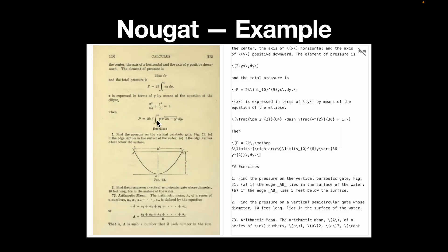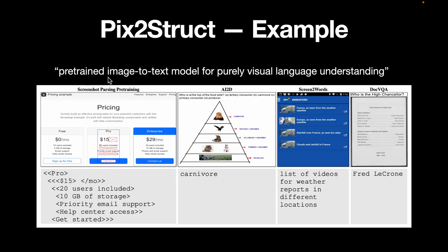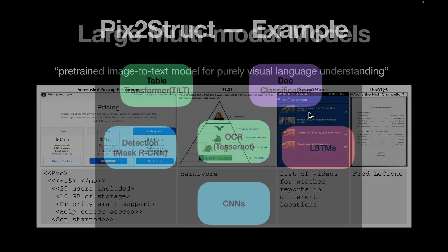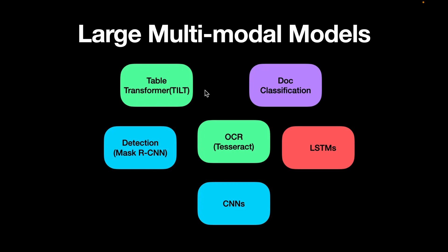Nougat converts input PDF files — for example, given an image of a book, it readily extracts equations into LaTeX format, indicating it understands the symbols in the equations, and it also extracts the text accurately. Pix2Struct is a pre-trained image-to-text model that purely does visual language understanding. There are also large multimodal models like Table Transformer, which specializes in extracting tables from PDFs, and object detection-based methods like Mask R-CNN to detect images or figures, as well as CNN and LSTM-based models.